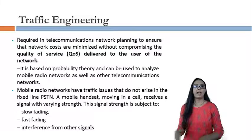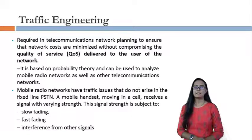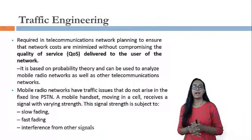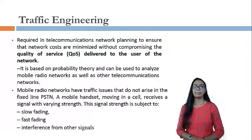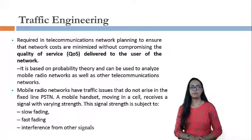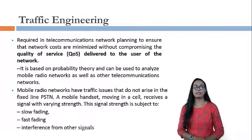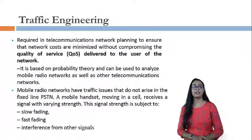Mobile radio networks have traffic issues that do not arise in the fixed line PSTN. A mobile handset moving in a cell receives a signal with varying strength, subject to slow fading, fast fading, and interference between other signals. These are causes that signal strength can be affected during radio transmission. The same probability theory discussed in chapter two for time-space-time switching can be applied here for calculating traffic as well.